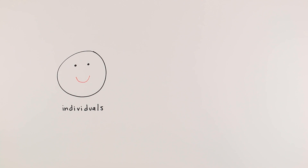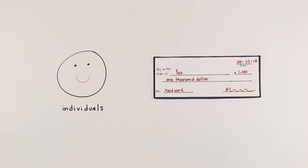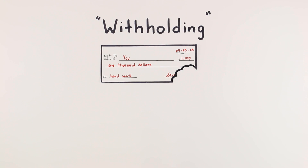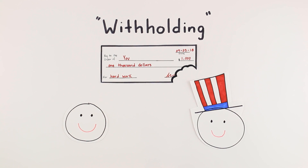Individuals pay personal income tax, which is usually taken directly out of their paychecks. This method of taking money directly from a person's paycheck is called withholding. By automatically withholding the tax money from a person's paycheck, it makes it easier for individuals to pay their taxes and for the government to collect taxes.